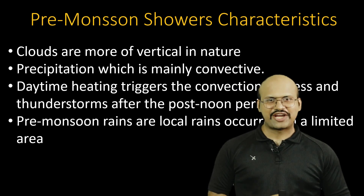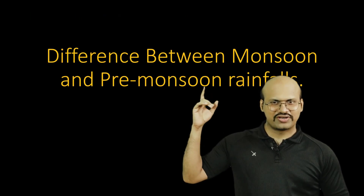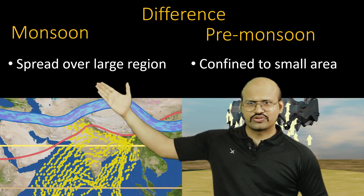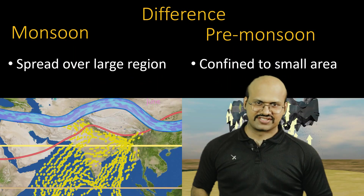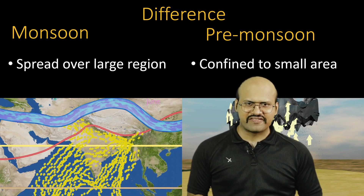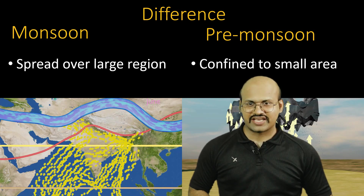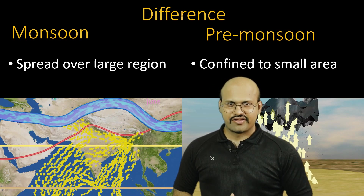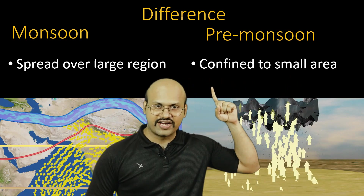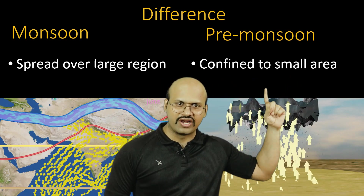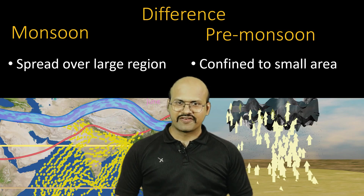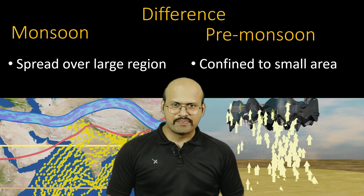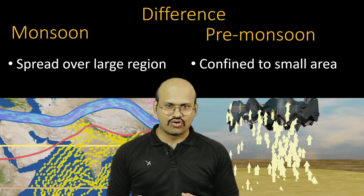Now let's understand the difference between monsoon and pre-monsoon rainfalls. Monsoon rainfalls are spread over a very large region and can affect a whole state or even the whole country. Pre-monsoon rainfalls are confined to only very small areas, affecting smaller regions like a city or district, but not a whole state or country.